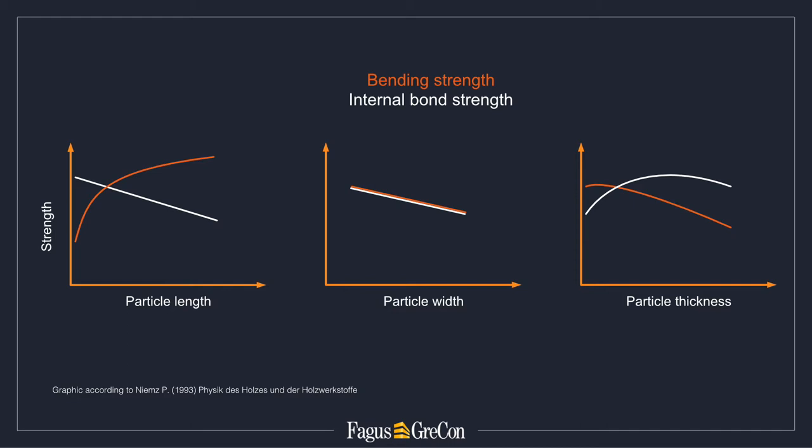Why are particles measured? The particle geometry is a decisive parameter for the mechanical properties of particle board. Particle length, width and thickness have an influence on the characteristic values of the finished board. Furthermore, the particle surface in relation to the volume is a decisive parameter for the effectiveness of gluing and the amount of glue used. The characteristic values and the required amount of glue are thus influenced by the size of the particles, which depends on the settings of the knife ring flaker and changes with the wear of the knife protrusions in the knife ring.